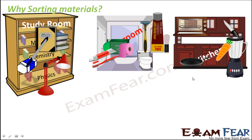If you want toothpaste you will directly go into the bathroom — that's how sorting helped. Since you have grouped different objects in different rooms, it makes things convenient. In a similar way, when we sort materials into different groups based on their properties, it helps us identify the characteristics of a particular material. When I want to choose a material to make a bell, I first list the properties I need: it should be hard, it should produce sound, and it should not be fragile. Then we look at the groups of materials which fulfill these properties and select from that group, making the entire selection process very convenient.